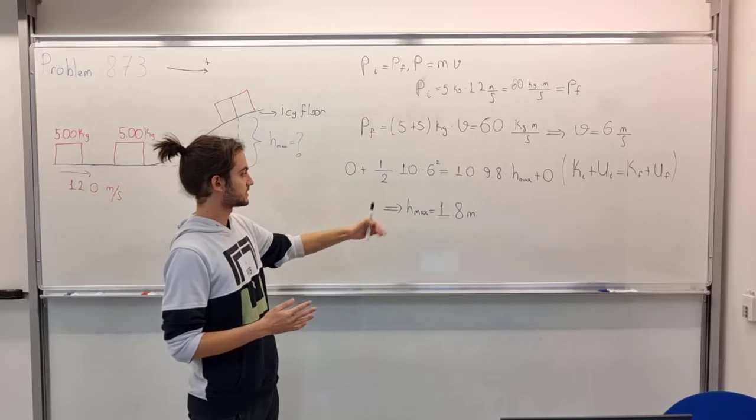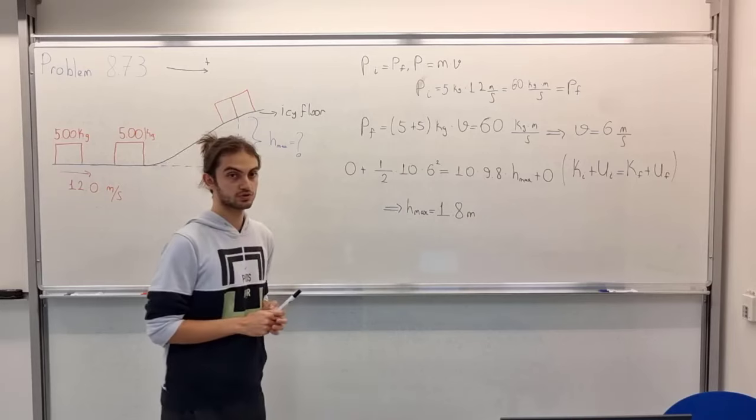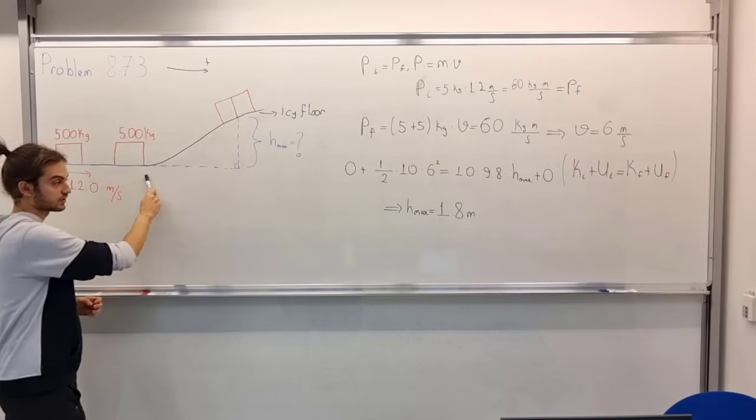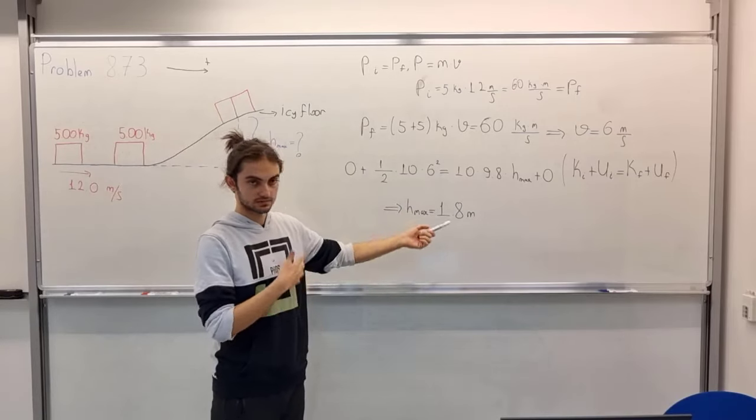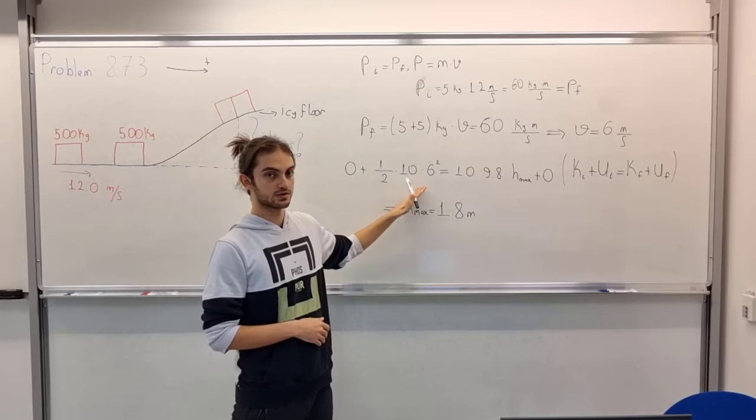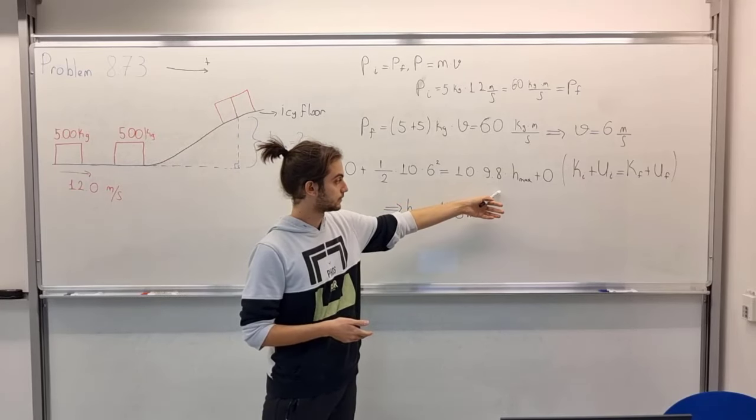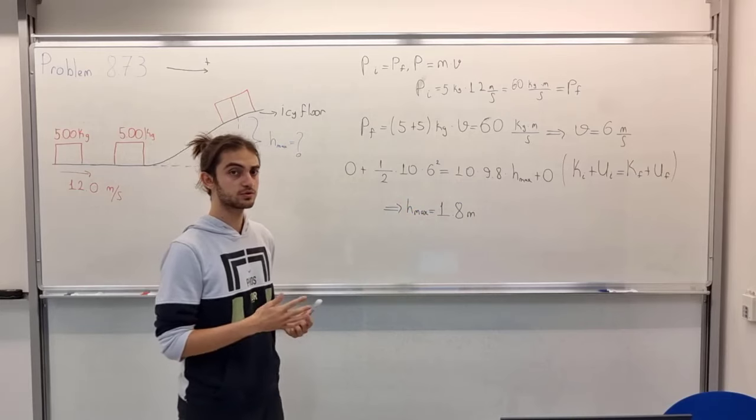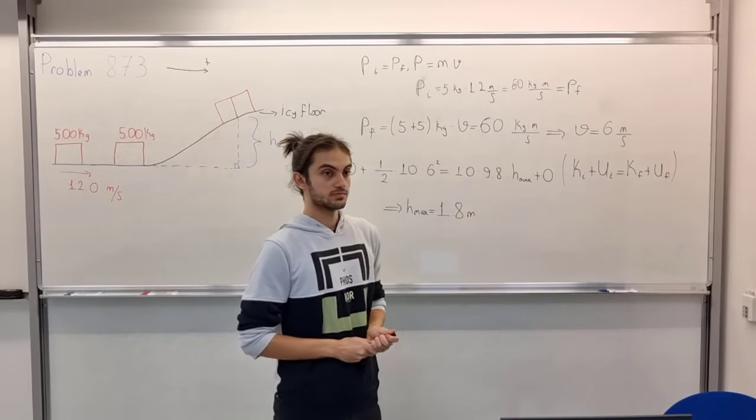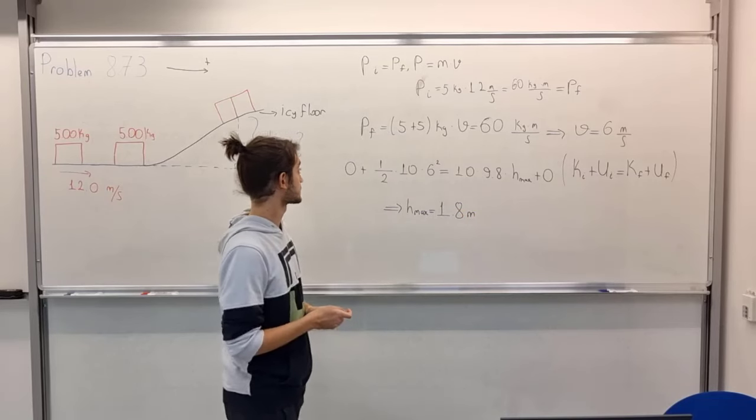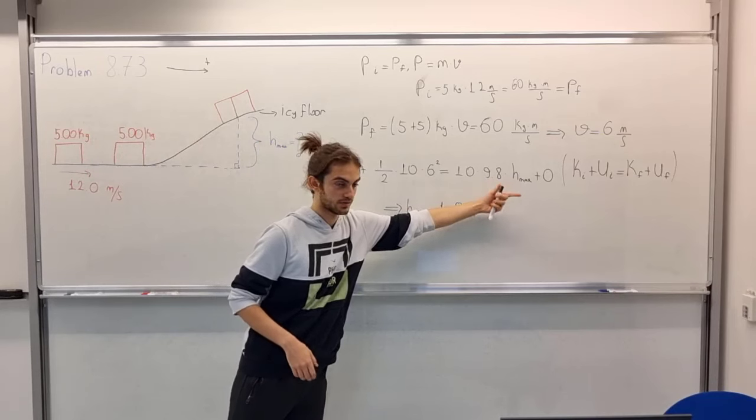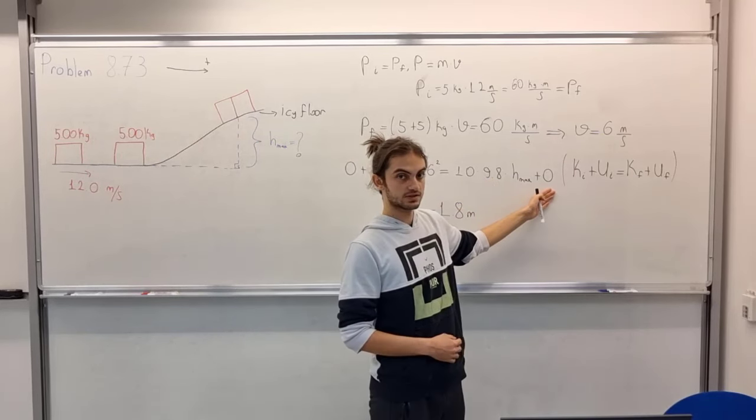So writing this, we have zero potential energy as I'm taking this level to be the ground. Then we have one half times 10 times 6 squared equals, this is our initial kinetic energy, and this is equal to the final potential energy, and this zero indicates our final kinetic energy. Why zero, you might ask? Because for this to be the maximum value of itself, this has to be zero.